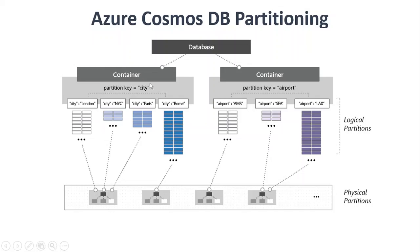And you can see in the image too — the database has two containers. The first container's partition key is city, and after that, London, New York, Paris — this is the logical partitioning. The same thing applies to the second container, where the partition key is airport, and those are the logical partitions. So this is what logical partitioning looks like.